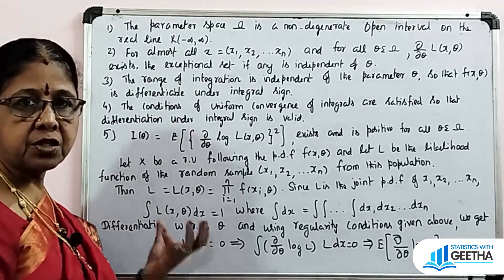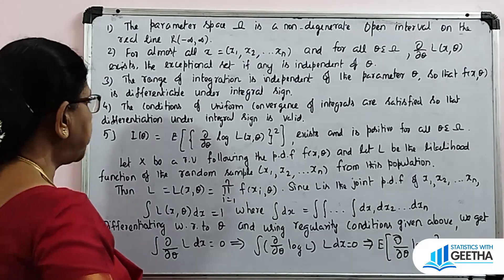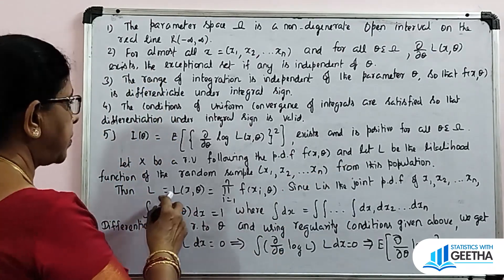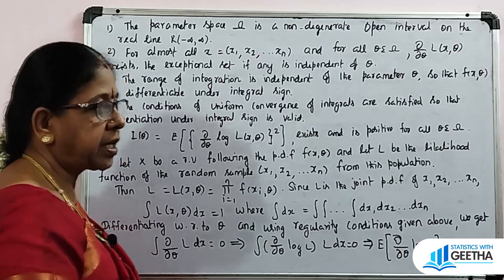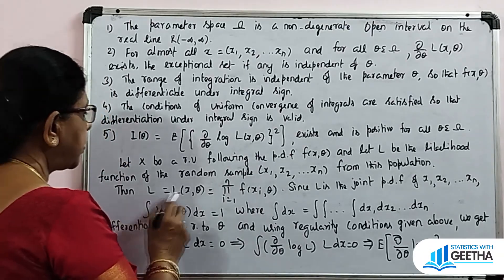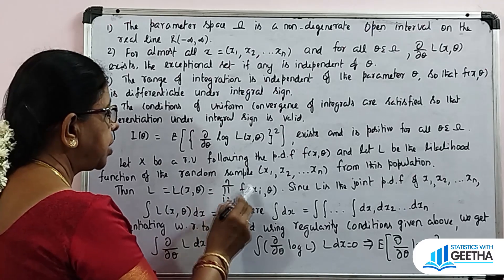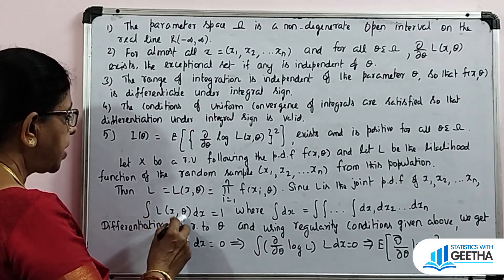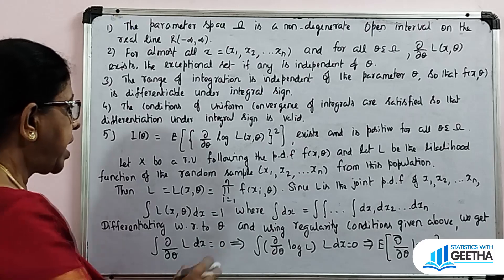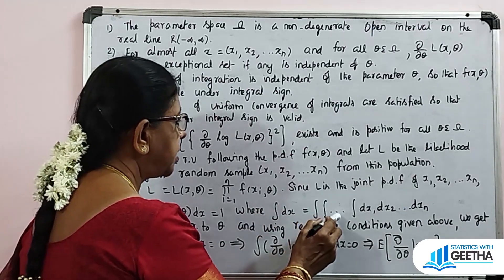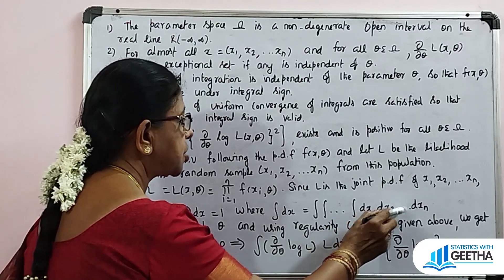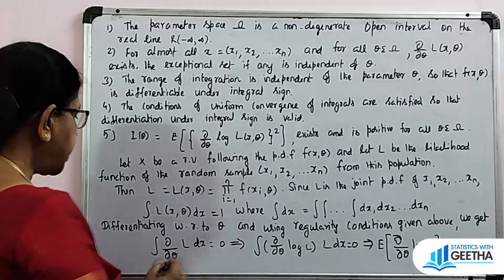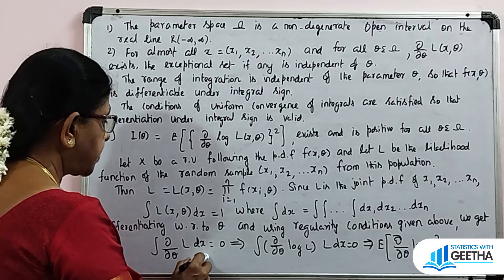Under these regularity conditions, we will prove the Cramér-Rao inequality. Let x be a random variable following the pdf f(x, θ), and let L be the likelihood function of the random sample x1, x2, ..., xn from this population. Then L = L(x, θ) = ∏(i=1 to n) f(xi, θ). Since L is the joint pdf of x1, x2, ..., xn, the integral of L(x, θ) dx equals 1. Differentiating with respect to theta and using the regularity conditions gives: ∫ ∂/∂θ L dx = 0.